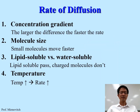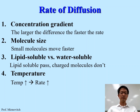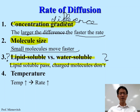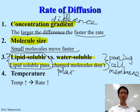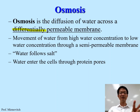In real life, what affects the rate of diffusion? Well, the concentration gradient. Concentration gradient means the concentration difference — meaning that one side has a high concentration and the other side has low concentration. The larger the difference, the faster the diffusion rate.